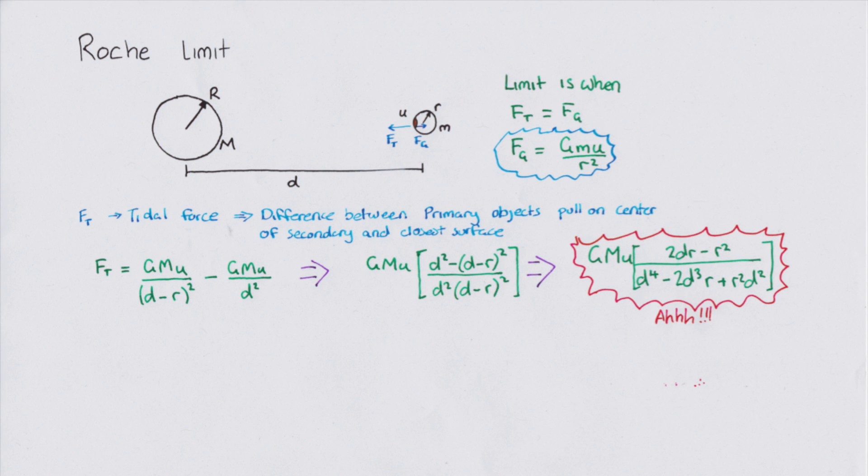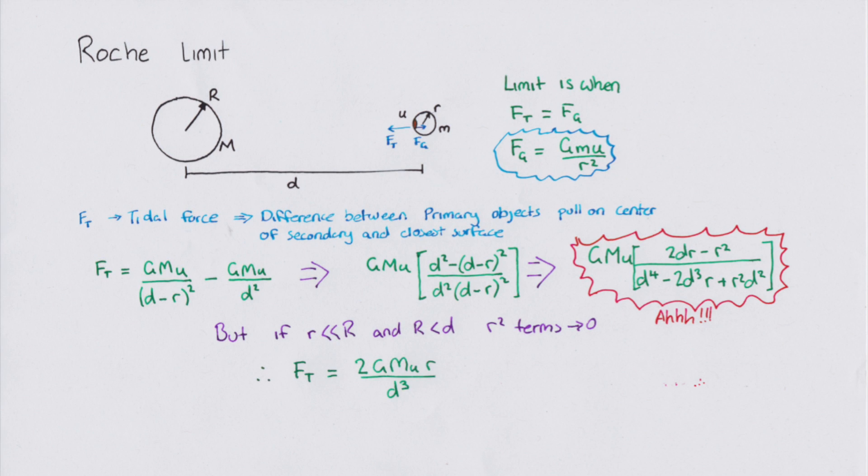But, thanks to some maths, if the radius of the primary is much larger than the secondary, and the separation greater than the primary radius, the square term tends to zero. Thus, we get this much nicer looking formula for the tidal force.